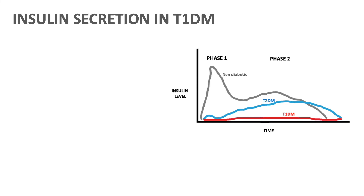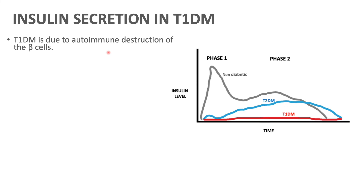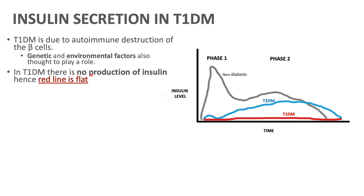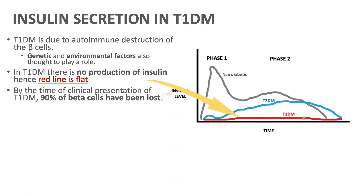Before we end, I want to briefly go through insulin secretion in type 1 diabetes. Type 1 diabetes is due to autoimmune destruction of the beta cells of the pancreas — it's thought that genetics or environmental factors play a role. Since there's destruction of the beta cells, there's no production of insulin, hence we have a flat line here. By the time of clinical presentation with type 1 diabetes, about 90% of the beta cells have already been lost, so there is very little insulin able to help control blood glucose levels.